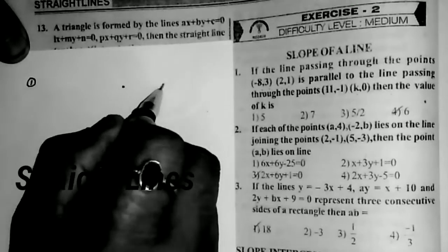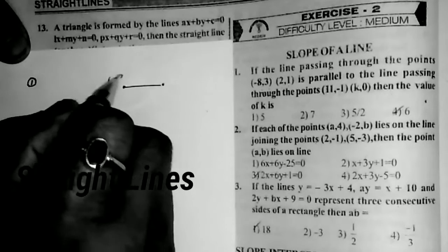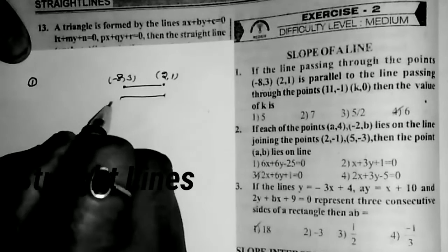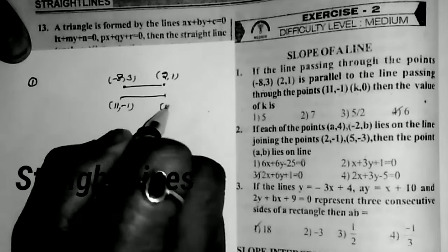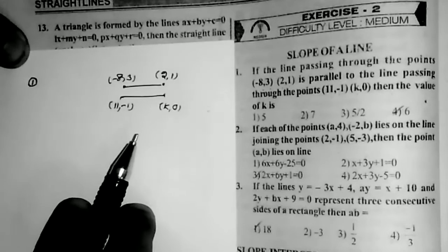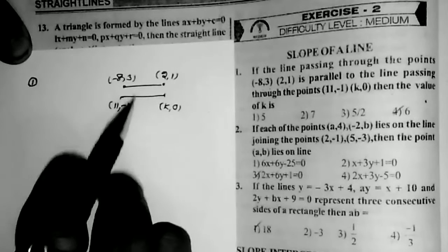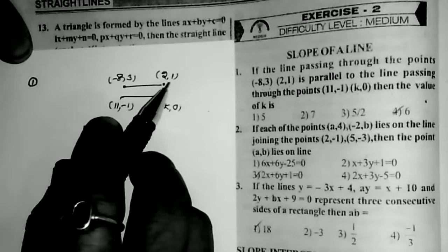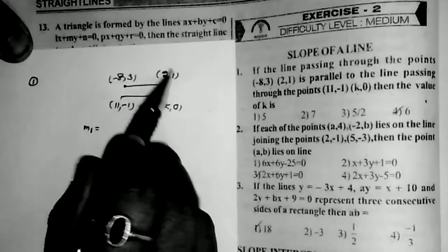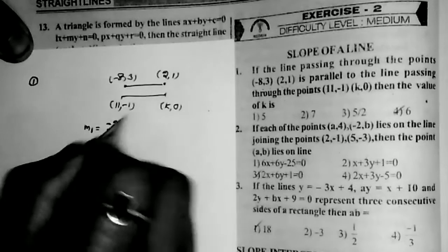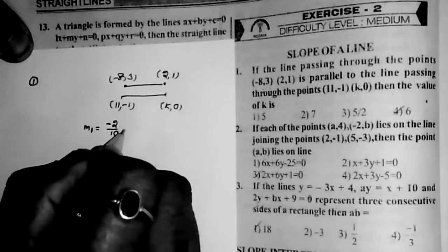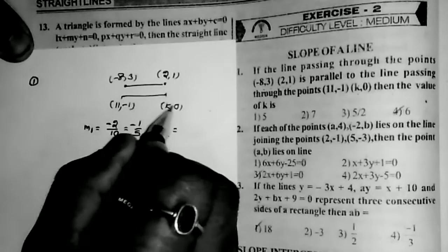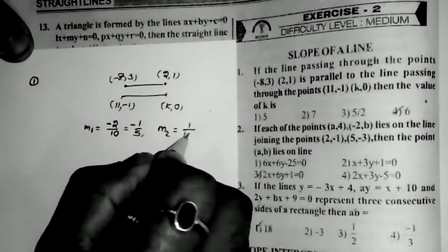Two lines are given. The first line joins the points (−8, 3) and (2, 1). The second line joins the points (11, −1) and (k, 0). The two lines are parallel to each other. Finding the slopes: slope of the first line M1 = (y2 − y1)/(x2 − x1) = (1 − 3)/(2 − (−8)) = −2/10 = −1/5. And M2, the slope of the second line = (0 − (−1))/(k − 11) = 1/(k − 11).